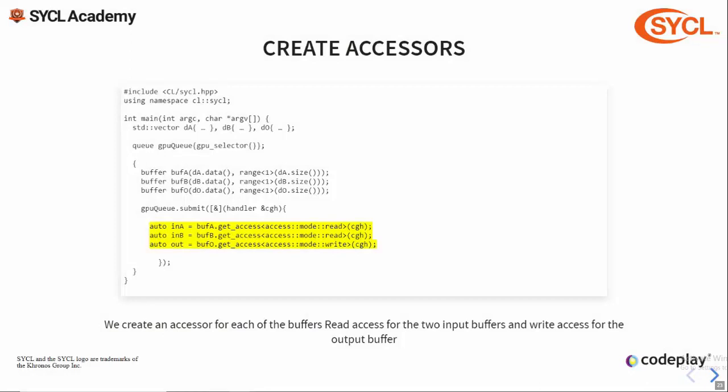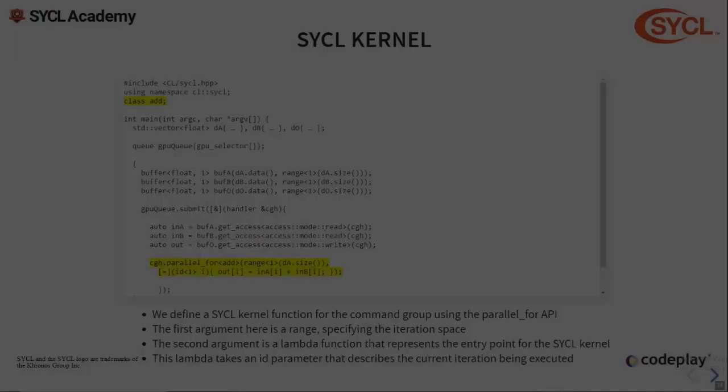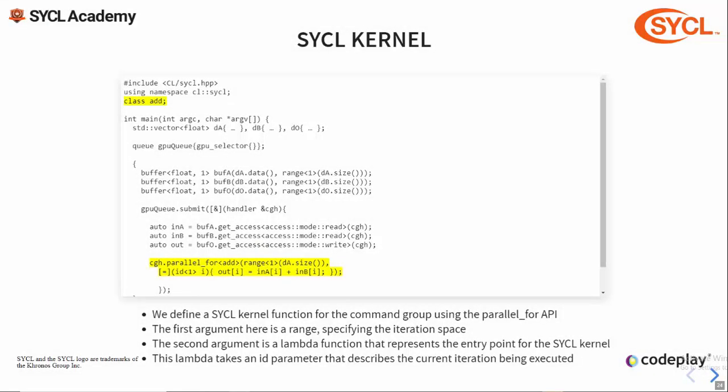Now we create accessors for each of these buffers to describe the data dependencies for the command group. To do this we call getAccess on the buffer objects, providing the handler to create the association between the accessors and the command group. For the two input accessors we specify access mode read — this tells the command group we are only reading from the input buffers and it should not copy back to them. For the output accessor we specify access mode write, telling the command group that we are writing to it and it should copy back. Next we define the kernel function itself by calling the parallel_for member function on the handler object. We pass this a range to describe the invocation range and a lambda representing the kernel function, which takes an id representing the current iteration. The kernel function performs a single vector add operation reading and writing from the accessors using the id with the accessor subscript operators. This completes the application — if compiled and run with properly initialized inputs it would enqueue a kernel on the GPU and return the result to the output vector.